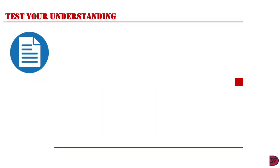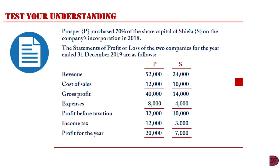Let's test our understanding. Prosper, represented by P, purchased 70% of the share capital of Sheila, represented by S, on the company's incorporation in 2018. The Statement of Profit or Loss of the two companies for the year ended 31 December 2019 is as follows.